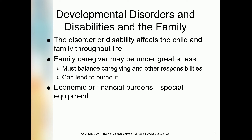The disorder or disability affects the child and family throughout life. When a child is physically or mentally disabled, the parents must look after the child — at least one parent has to stay home. Family caregivers may be under the greatest risk. As a support worker, you are an external caregiver; the mother, father, sister, or brother are the family caregivers. They have great stress and must balance caregiving and other responsibilities.